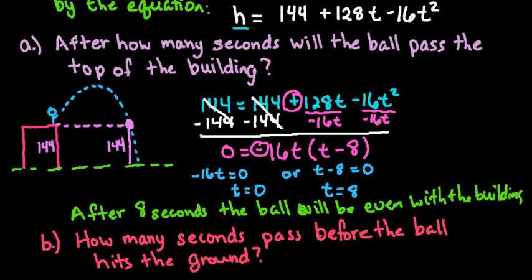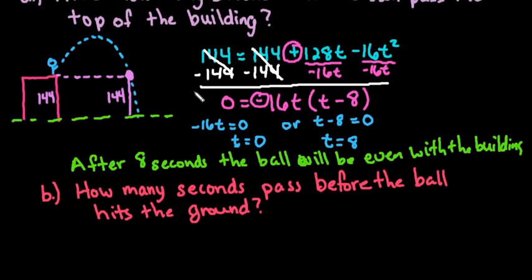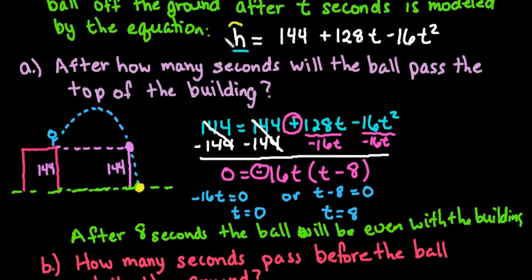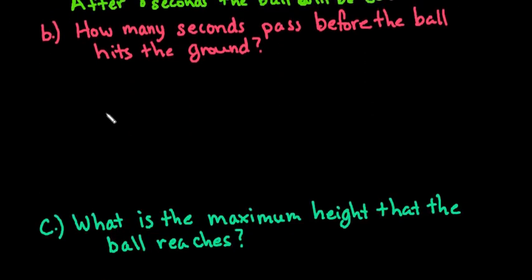For the next question we're going to look at how many seconds it takes for the ball to actually hit the ground. This represents our y-axis and this represents our x-axis, looking over time until it hits the ground. So this time our height is going to be 0, because if the ball is on the ground it's 0 feet off the ground. We would have 0 equals 144 plus 128t minus 16t squared.